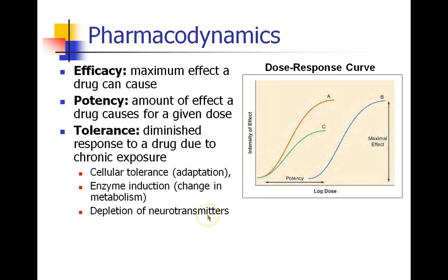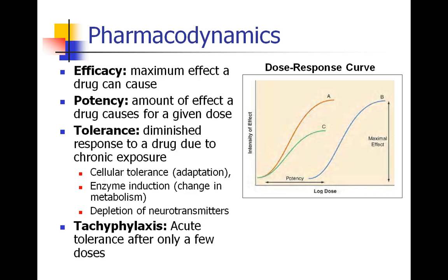Other ideas include tolerance — a diminished response to a drug due to chronic exposure. This can happen at the cellular level or due to changes in your enzymes or depletion of neurotransmitters. There's also something called tachyphylaxis, which is acute tolerance after just a few doses — you can see tachyphylaxis happen right in front of your eyes in the operating room.